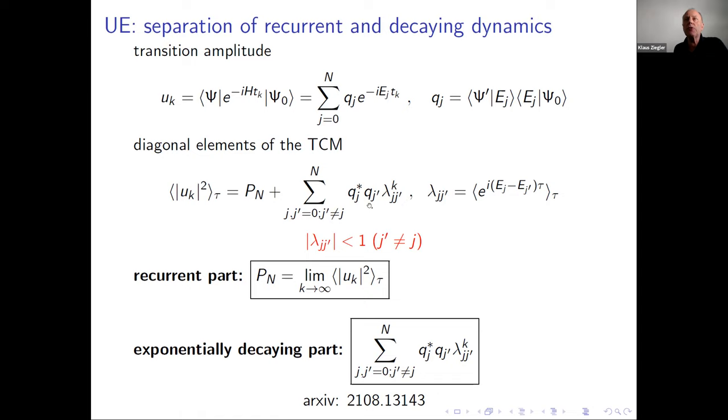When we average this quantity, focusing on the diagonal elements of the time correlation matrix, we observe a separation of dynamical regimes. One is the recurrent part, which is independent of time. If we send k to infinity, we get this part based on the diagonal elements λ_jj. The other term is the exponentially decaying expression with respect to k. We have a separation of dynamics into the recurrent part, which is a static expression, and an exponentially decaying part. This is a consequence of the time average.